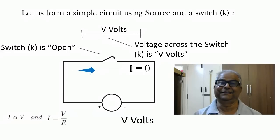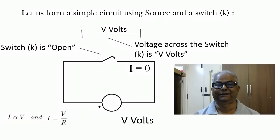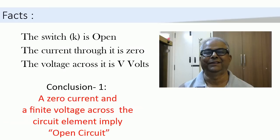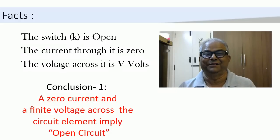Another interesting fact is that if we measure the voltage across the switch, we find that it is V volts. So remember: the current flowing through the switch is zero, and the voltage across the switch is V volts. Now we are ready to define the open circuit concept in a very simple way.